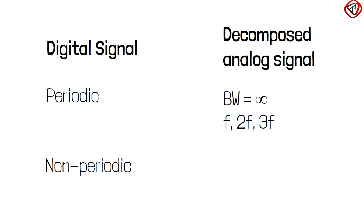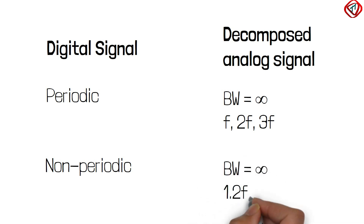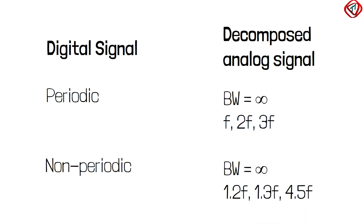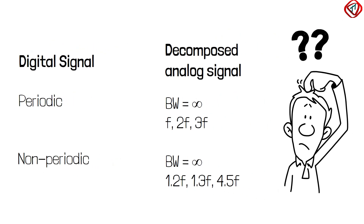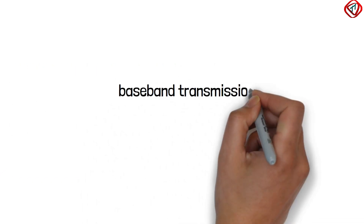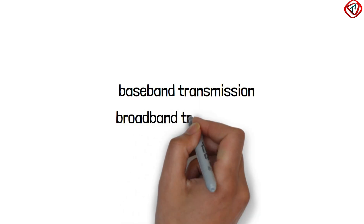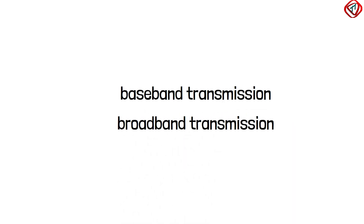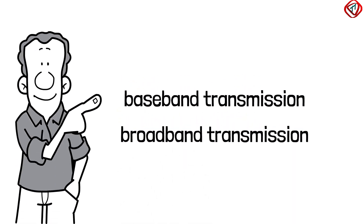Having discussed digital signals, the question is: how to send a digital signal from source to destination? To transmit a digital signal, we can use either baseband transmission or broadband transmission. Let us first discuss baseband transmission.